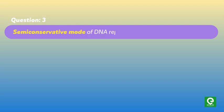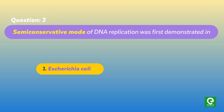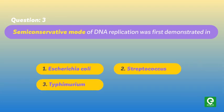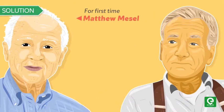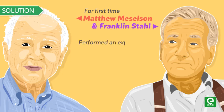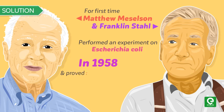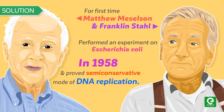Question 3 (AIPMT 2010): Semi-conservative mode of DNA replication was first demonstrated in — (1) Escherichia coli, (2) Streptococcus, (3) Salmonella typhimurium, (4) human cell. Solution: Matthew Meselson and Franklin Stahl performed an experiment on Escherichia coli in 1958 and proved semi-conservative mode of DNA replication. Hence, option 1 is correct.